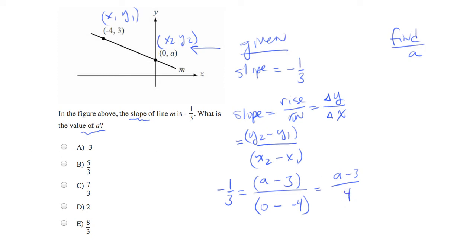So let's do some algebraic simplification here. Let's multiply both sides by 4. And we'll end up with negative 4 thirds equals A minus 3. Let's add 3 to both sides.